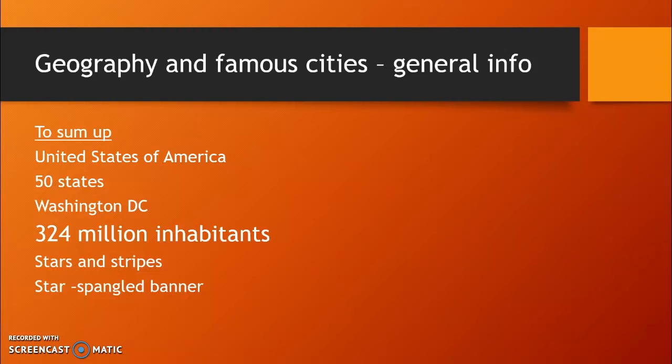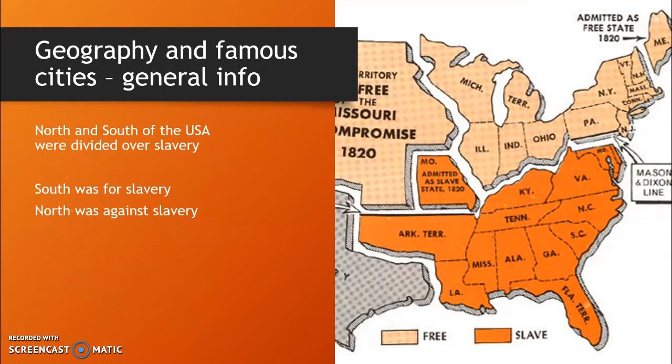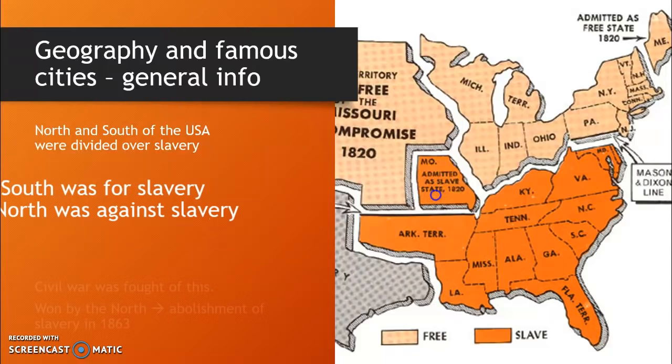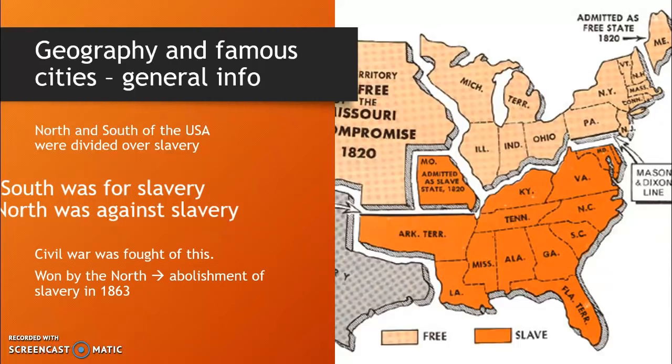The USA has long been divided into two: the Northern states and the Southern states. The states in the South of the US were for slavery, while the North was against it. The Civil War was started because of this disagreement, and this eventually led to the abolishment of slavery in 1863.